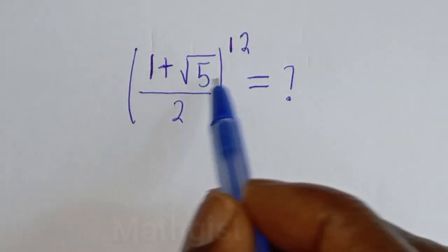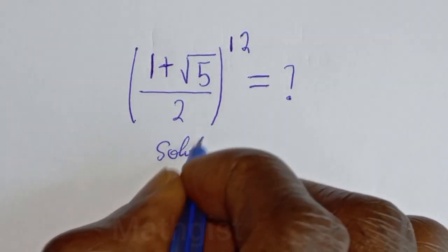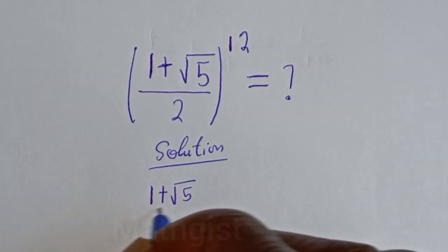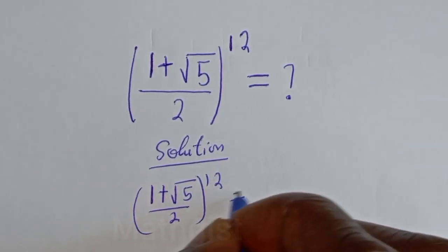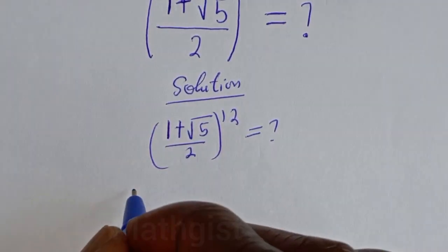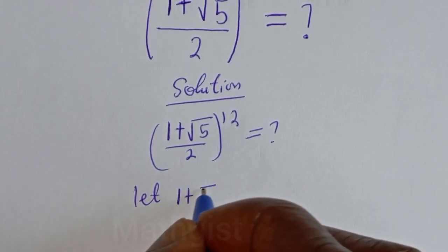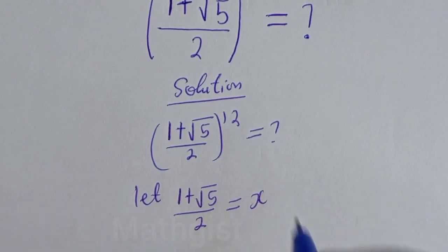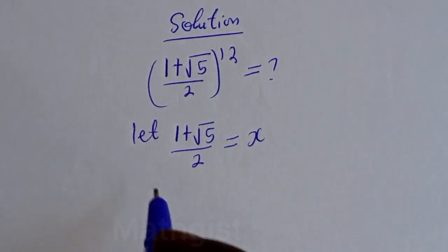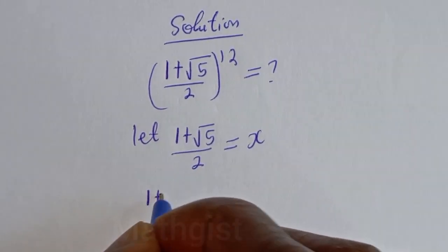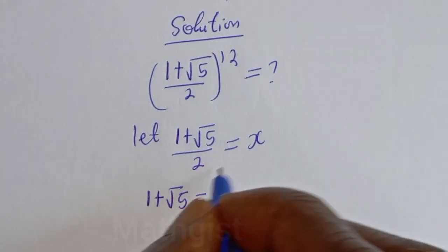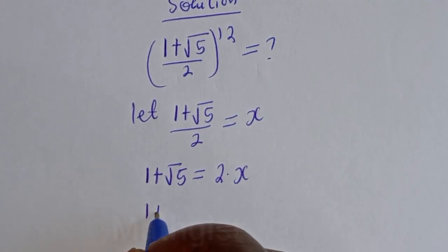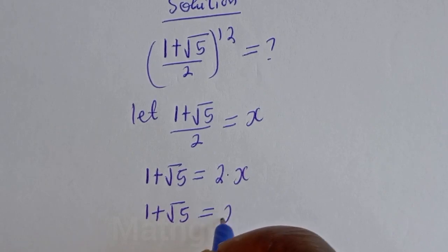We want to find the value of (1 plus square root of 5) over 2, raised to the power of 12. Let's let x equal (1 plus square root of 5) over 2. Then 1 plus square root of 5 equals 2x.